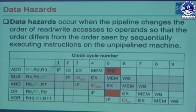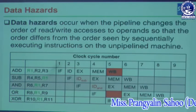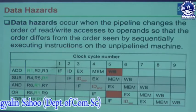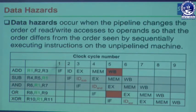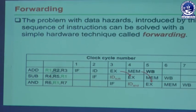Here is an illustration of data hazards. Data hazards occur when the pipeline changes the order of read/write accesses to operands so that the order differs from the order seen by sequentially executing instructions on an unpipelined machine. For example, with five instructions — addition, subtraction, logical AND, logical OR, and logical XOR — all of the subsequent instructions like subtraction, OR, and XOR depend on the addition result as one of their operands. This causes unsequential data access management, which is the data hazard.